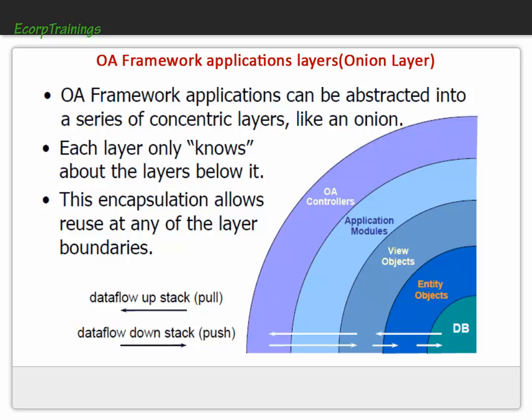In summary, the layers are: database, then entity object, then view object, then application module, and finally the controller. Oracle Application Framework applications can be abstracted into a series of concentric layers, like an onion, where each layer only knows about the layers below it.